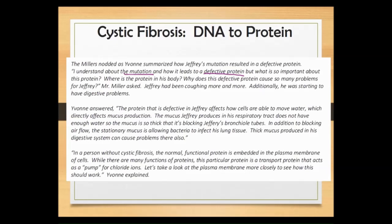We've talked about how proteins fold according to certain rules, and if we had an A where we normally would have a G in our DNA, that could lead to a different amino acid in our protein. That would lead to our protein folding differently, and we know that protein may not work correctly. The question we have to answer now is what is so important about this protein in cystic fibrosis, and why is it causing so many problems for our patient Jeffrey?